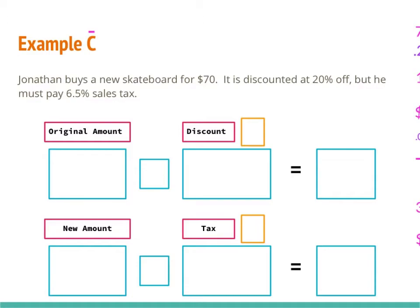Example C says Jonathan buys a new skateboard for $70. It is discounted at 20% off, but he must pay 6.5% sales tax. This is the scenario you will most likely run into — any time you buy something from a store, even though it's on discount, you're still going to have to pay your sales tax. I've laid out six boxes: one row for finding the discount and one row for figuring out the tax. The original amount is $70. Since it's a discount, that's going to be a minus. The discount is 20%, or 0.20 as a decimal. So 70 times 0.20 gives me $14. Then 70 minus 14 gives me $56.